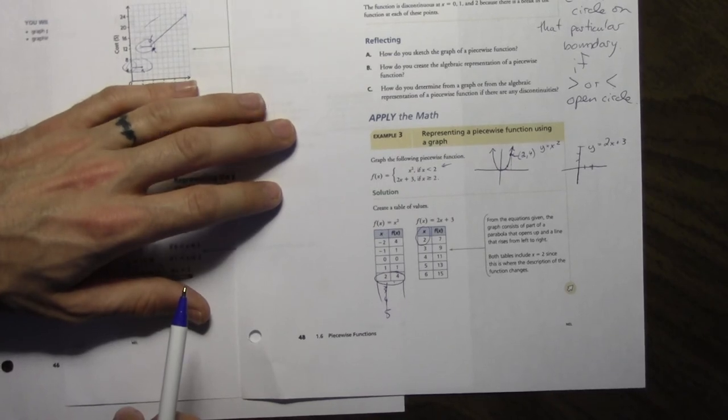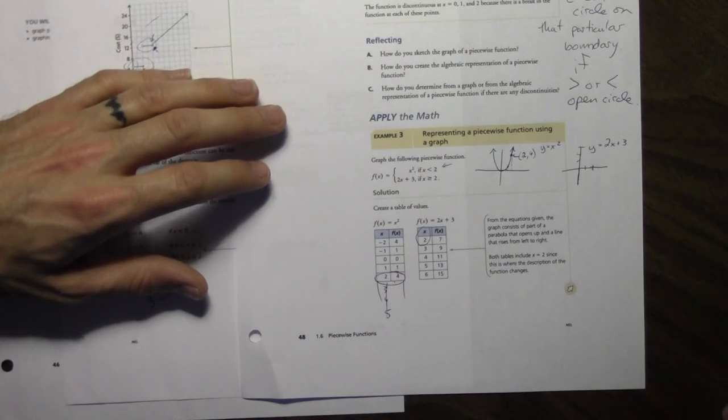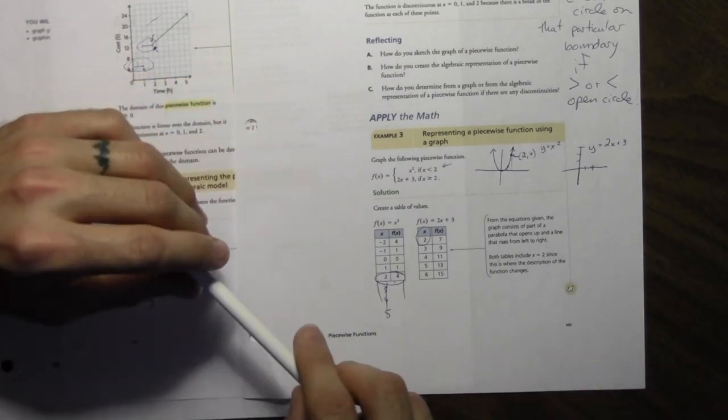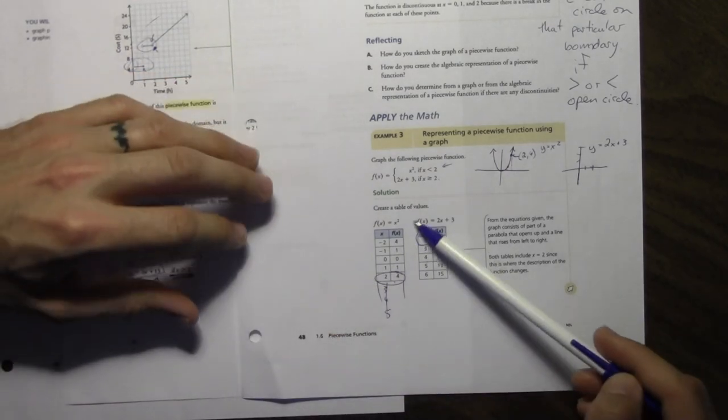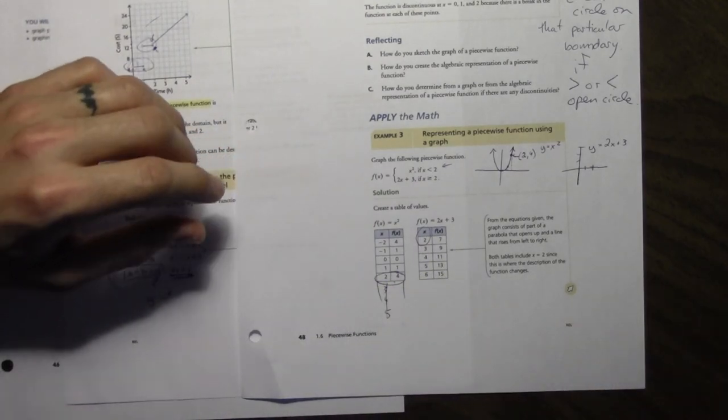Joseph? Are you gonna have to make the table values on the test? If I ask you to, yeah. If not, you can go straight to the graph. You don't have a problem doing this though, right? No. You understand this? Okay.